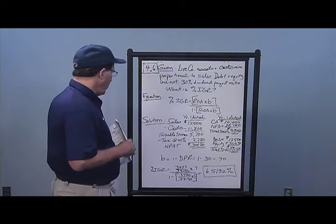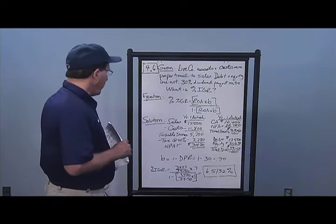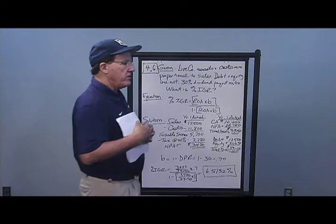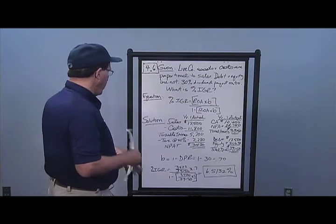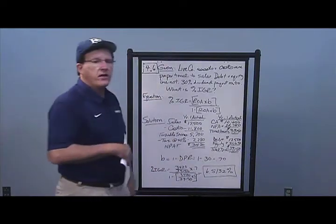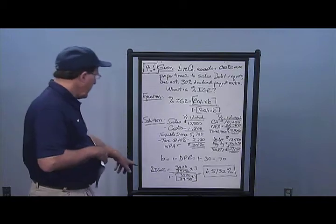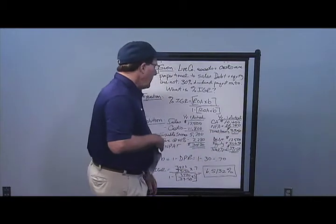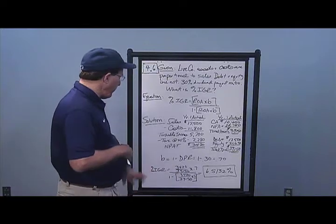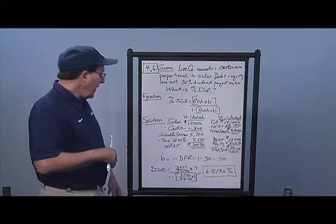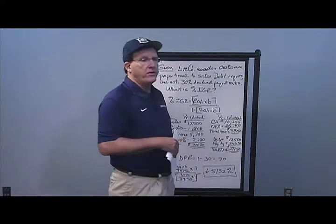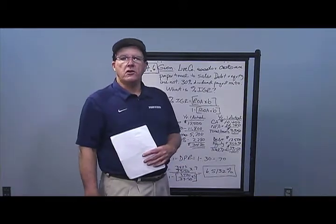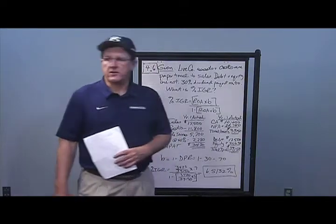b is one minus the dividend payout ratio, so one minus 0.3 gives a retention ratio b of 0.7. ROA is net income of 3,420 divided by total assets of 39,150. Plugging in: 3,420 over 39,150, times b of 0.7, divided by one minus that same quantity — I get an internal growth rate of 6.5132%. This is the rate at which the company could grow year-over-year without adding any new external financing. That's the answer to problem six.